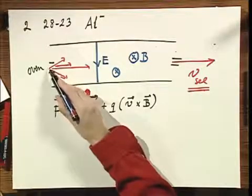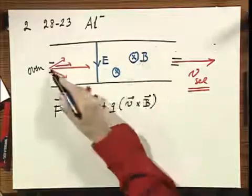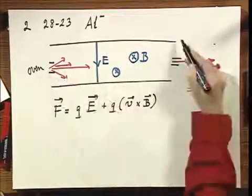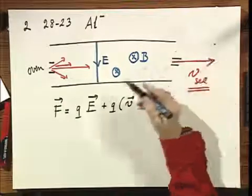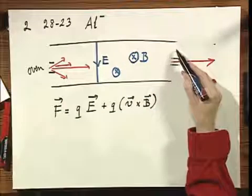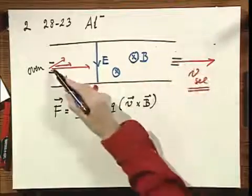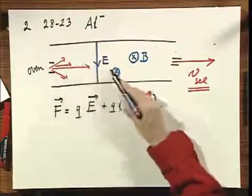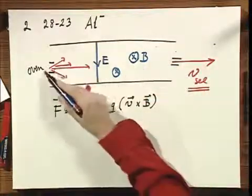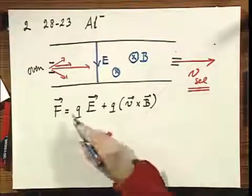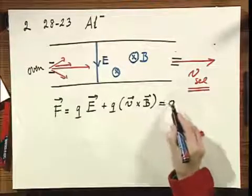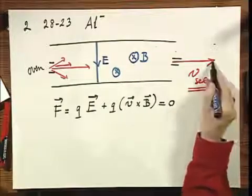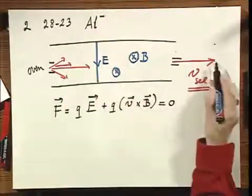If I make the force on these ions zero, then obviously they will not be deflected. If the force is not zero but constant, then they will make a parabola, or they will be accelerated in one direction. But if the net force is exactly zero, then they will go through undisturbed.